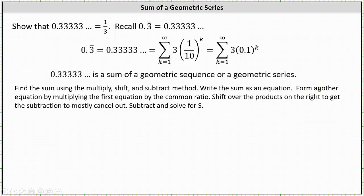We write the sum as an equation, and then we form another equation by multiplying the first equation by the common ratio. We shift over the products on the right to get the subtraction to mostly cancel out. We subtract the two equations and then solve for s.